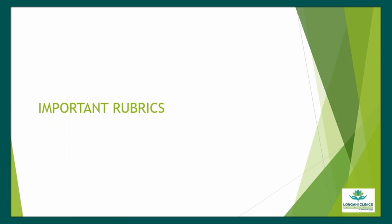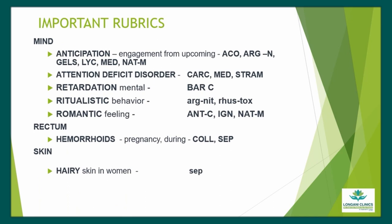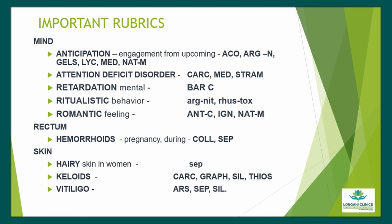Mind chapter: Anticipation, anxiety from upcoming engagement — drugs are Aconite, Argentum Nitricum, Gelsemium, Lycopodium. Attention Deficit Disorder — drugs are Carcinocin, Medorrhinum, Stramonium. Mental Retardation — drug is Baryta Carb. Ritualistic Behavior — drugs are Argentum Nitricum and Rustox. Romantic Feelings — drugs are Antimonium Crudum, Ignatia, Natrum Mur. Rectum chapter: Hemorrhoids during Pregnancy — drugs are Collinsonia, Sepia. Skin chapter: Hairy Skin in Women — drug is Sepia. Keloid — drugs are Carcinocin, Graphites, Silicea, Thiosinaminum. Vitiligo — drugs are Arsenic, Sepia, Silicea.